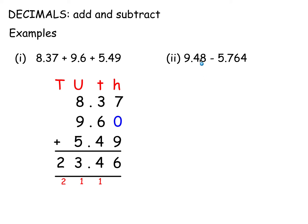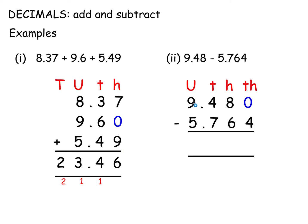Same with subtraction — line them up according to place value: units, tenths, hundredths, thousandths. Here I put in a zero in the thousandths column, which is quite important because we're trying to subtract 4 from this zero. So we have to borrow from this 8, making it a 7. Borrow the 1 in here and it becomes a 10.